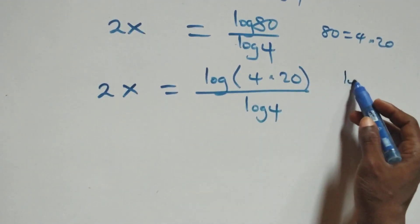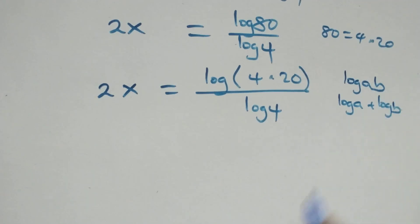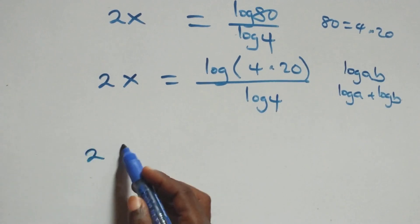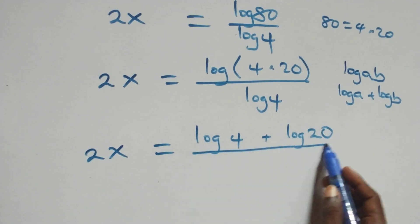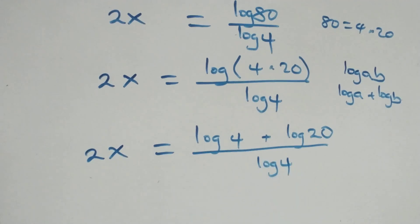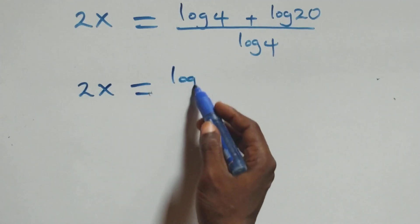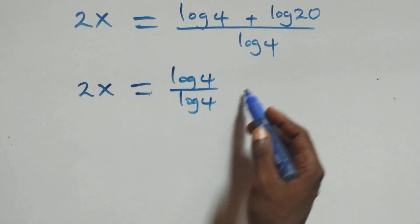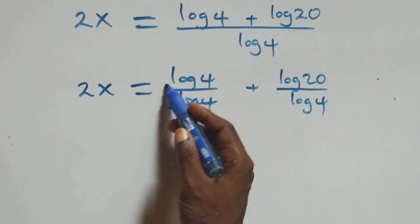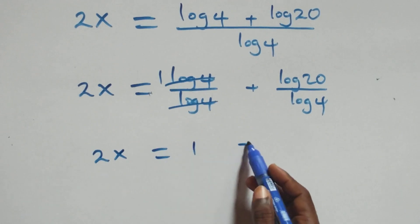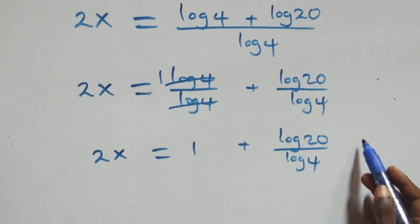Then it follows: what we want to use is that when we have log(A times B), it is the same thing as log A plus log B. That is, what we have here becomes 2x equals log 4 plus log 20, all over log 4. We separate this into two fractions: 2x equals log 4 over log 4, plus log 20 over log 4. Here log 4 cancels with each other and we have 1, which implies 2x equals 1 plus log 20 over log 4.